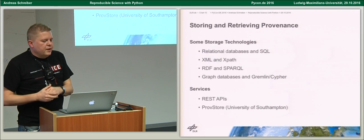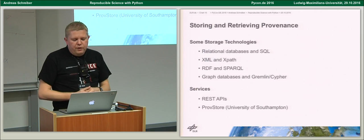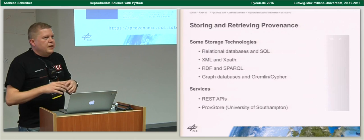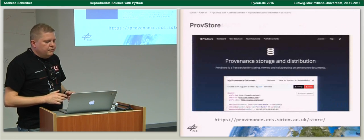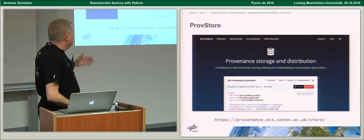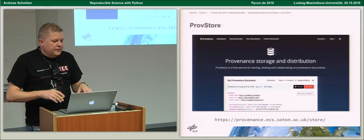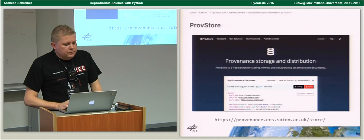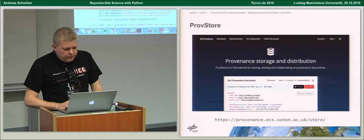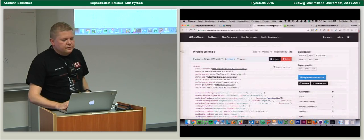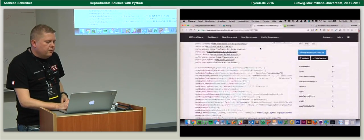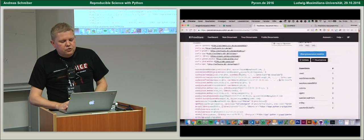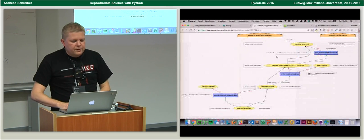For storing, you can use relational databases and query with SQL, or use XML, RDF, or graph databases. There are also services with APIs — for example, there's a public PROV store service from the University of Southampton. You can go to the website and send provenance information via their API. The website can also visualize your provenance data and generate graphical representations in various formats.